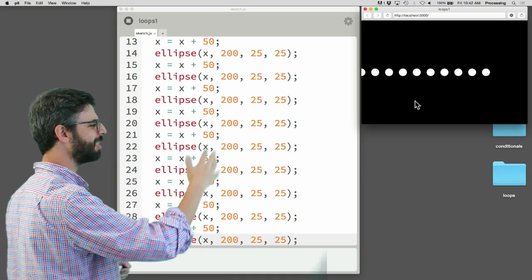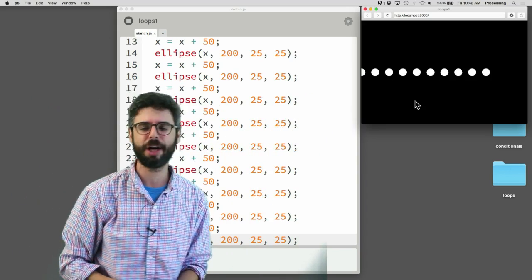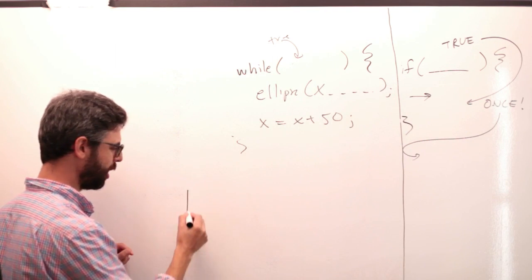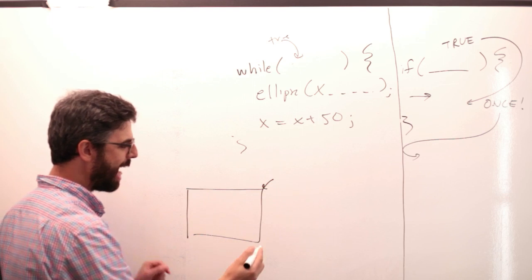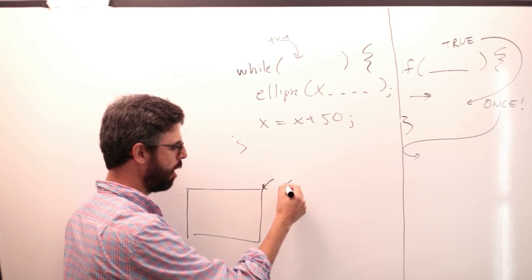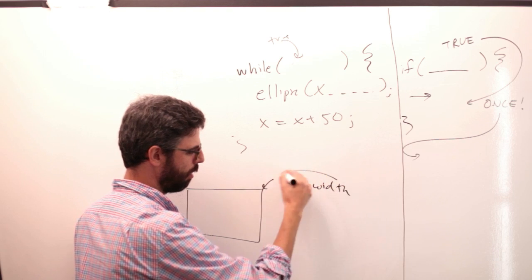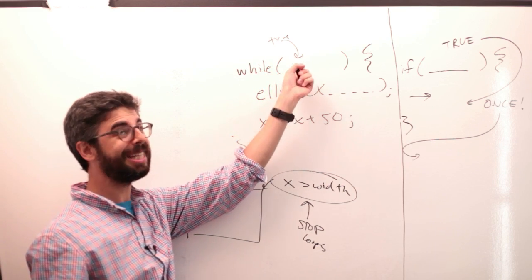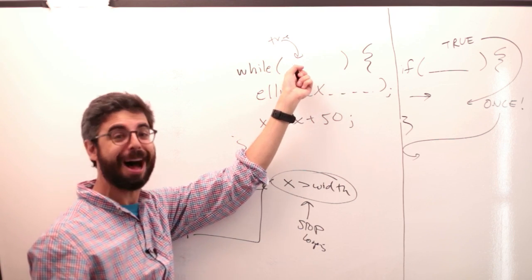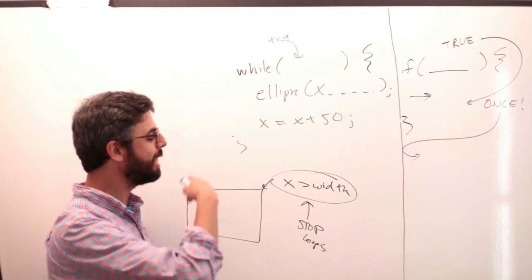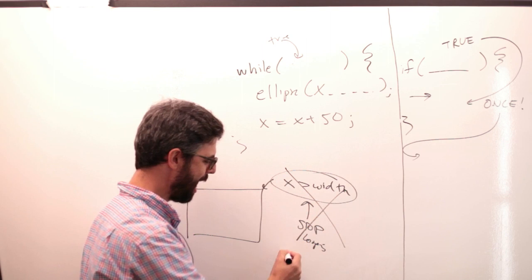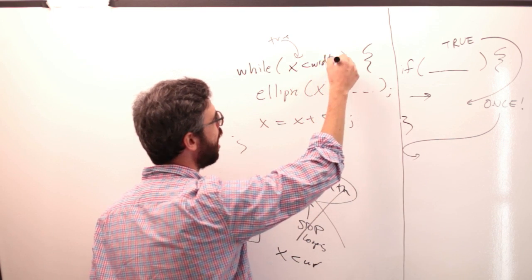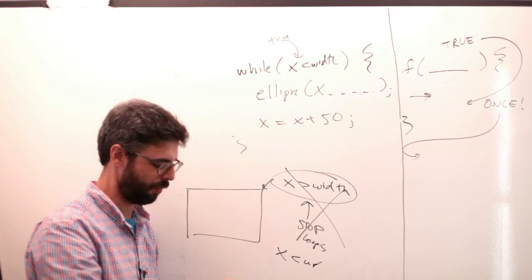I can make up something: I want to keep drawing circles until I get to the edge of the window. So what is my exit condition? The exit condition is: I want to stop looping when x is greater than width. But remember, the boolean expression inside the while is when it's true — that's when I continue looping, not when I stop. So I want to continue looping as long as x is less than width. As long as x is less than width, I want to draw this ellipse over and over and over again.